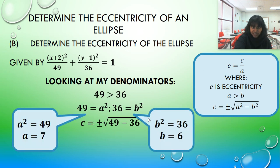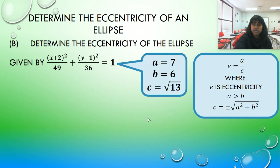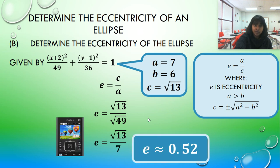Same information I just did. There we go. And we get the square root of 13. So my eccentricity is going to be the square root of 13 divided by, should just say 7, but the square root of 49. And then we end up putting that in a calculator and we get 0.52.